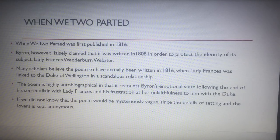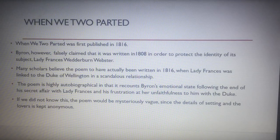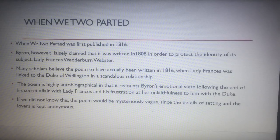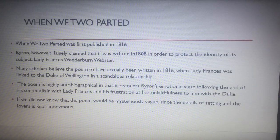'When We Two Parted' was first published in 1816, but Byron falsely claimed it was written in 1808 because he was trying to protect the identity of the female subject, who is believed to be Lady Frances Wedderburn Webster. Many scholars believe the poem was actually written in 1816, when she was linked to the Duke of Wellington in a scandalous affair. The poem is autobiographical, recounting his emotional state following the end of his secret affair with her and his frustration at her unfaithfulness to him with the Duke. Without this context, the poem would be mysteriously vague because the lovers are kept anonymous — that notion of something secret.